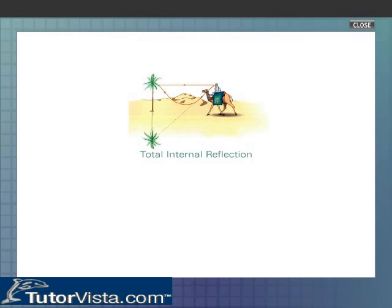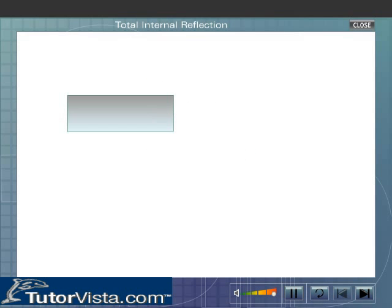Total internal reflection. Let us consider a ray of light passing from glass to air, that is, from a denser medium to a rarer medium. When a ray of light is incident on a refracting surface, a major part of the incident light is refracted and a small portion is reflected. The refracted ray bends away from the normal after refraction.